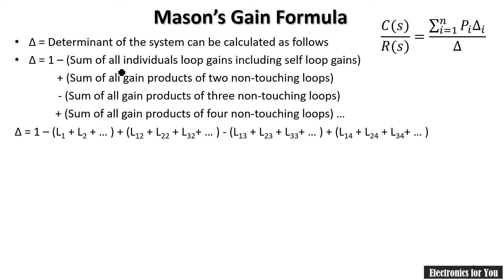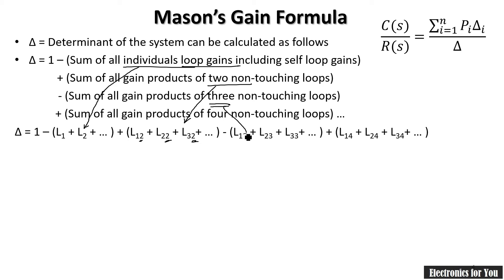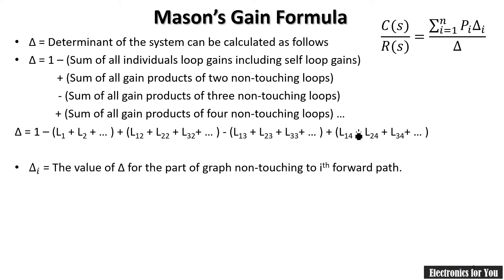Individual loop gains are indicated by L1, L2, L3, etc. Two non-touching loops are indicated by L12, L22, where the subscript '2' indicates a pair of two non-touching loops and the number indicates which pair. Three non-touching loops are indicated similarly, with '3' denoting three non-touching loops, and '4' denoting four non-touching loops, and the numbers indicating the pair index.